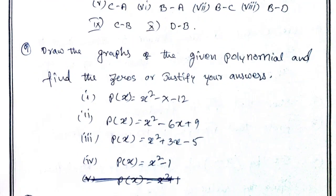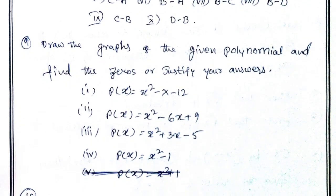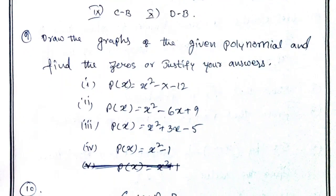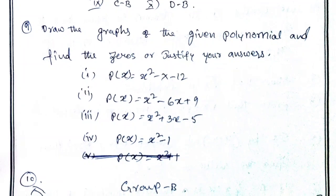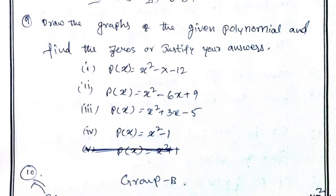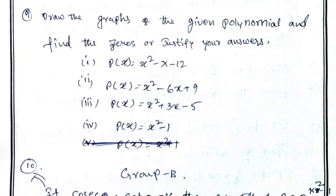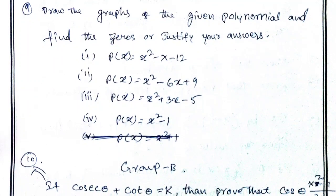And find the zeros and justify your answer. These four graphs are compulsory. Practice all the polynomials. That's the group B. Very important chapter.